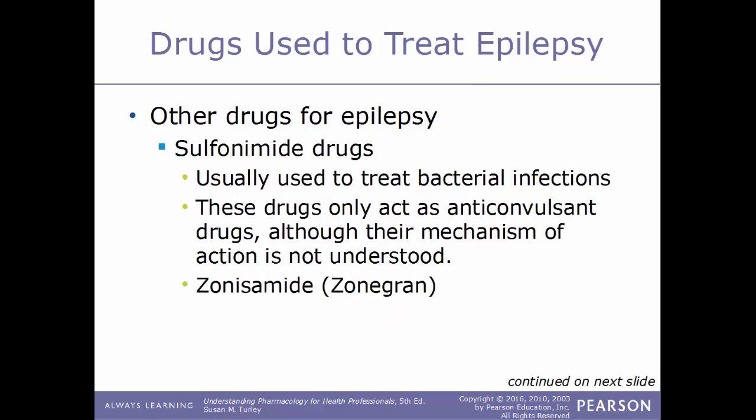Another type are sulfonamide drugs, usually used to treat bacterial infections. These act as anticonvulsants, although the actual mechanism of action is not fully understood. An example is zonisamide, also known by its trade name Zonegran.